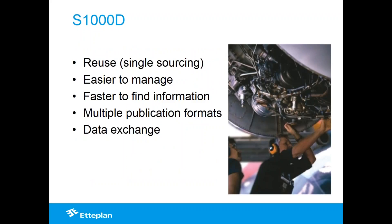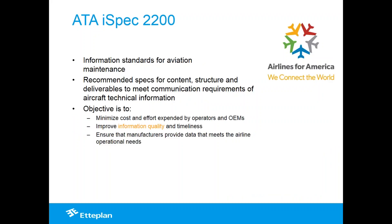The principle of XML in S1000D means information is created once, reused multiple times, and published in multiple formats. This allows information to be managed and found more easily by end users like service engineers, and published to PDF, HTML, interactive HTML, or even augmented reality. It also facilitates data exchange when you have different suppliers. The iSpec 2200 by ATA is essentially the same, but for commercial activities — though S1000D is also used for commercial aircraft like the A380 and Boeing 787.